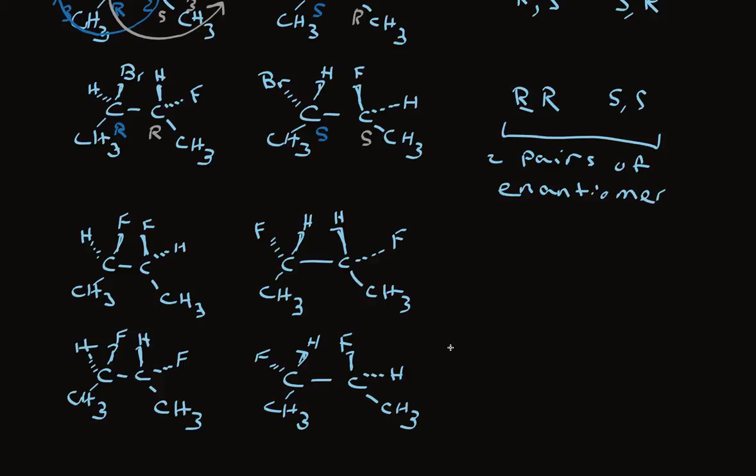And next we assign the absolute configuration. We'll move from fluorine to carbon, methyl, clockwise, R, R, S, S. And we move from fluorine to carbon to methyl. One, two, three. This is S, and this is R. This is R, and this is S.